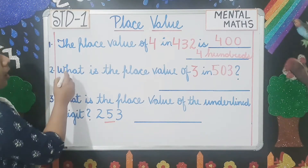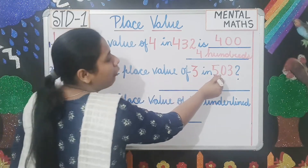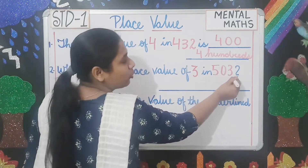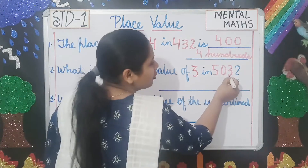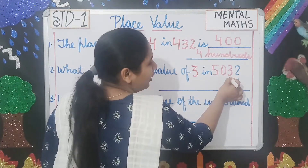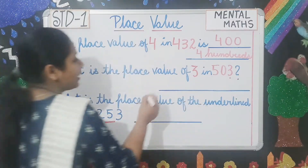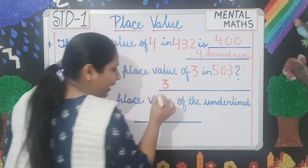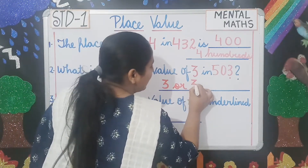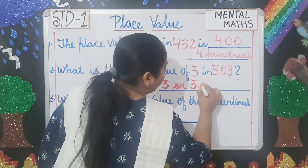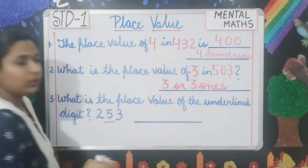Number 2: what is the place value of 3 in 503? Where is 3 — 3 is in the ones place. So the place value of 3 is 3. You can write it as 3 or 3 ones, since it is in the ones place.